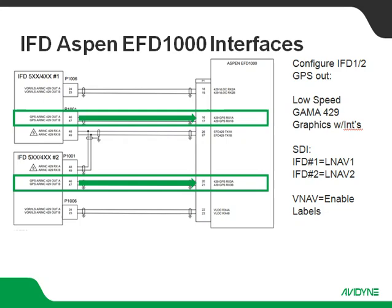The VNAV setting, we're going to set that for Enable Labels. The reason we're setting that for Enable Labels is assuming we're doing a WAAS installation. What this does is it tells the IFD to go ahead and provide the ARINC 429 labels associated with vertical guidance for GPS approaches. If you've got an Aspen EFD1000 interfaced with an IFD and you have a scenario where they're not getting any vertical guidance or vertical deviation on an LPV approach, 9 times out of 10 this setting is incorrect — it needs to be VNAV Enable Labels. If it's set to Disable, it will disallow those ARINC 429 labels from going out.